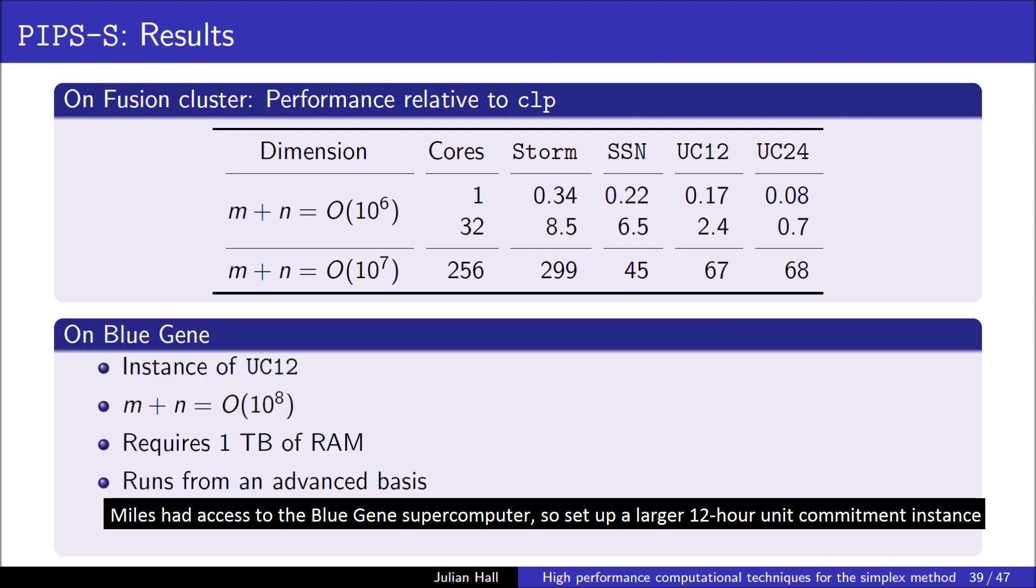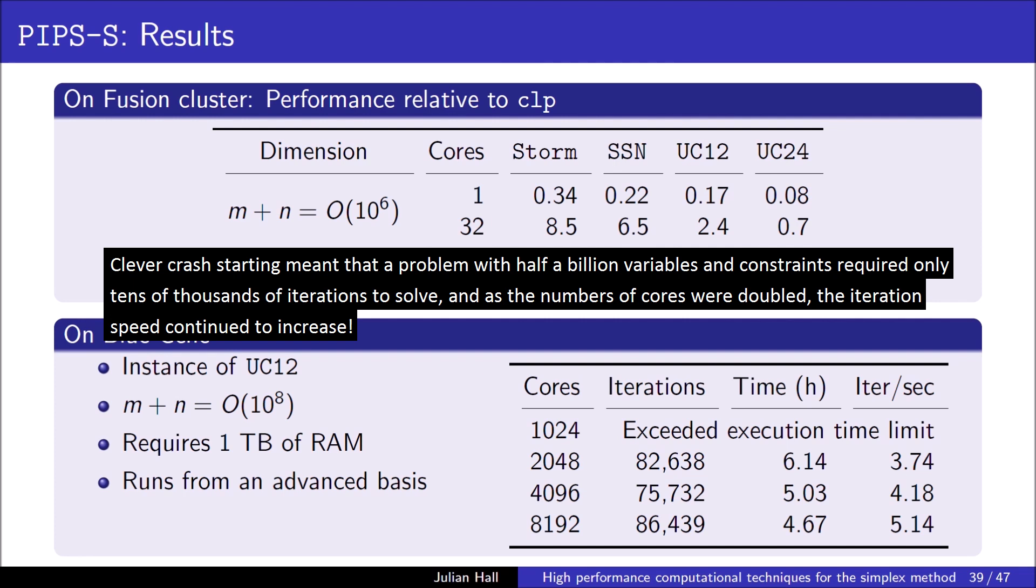Miles had access to the Blue Gene supercomputer, so set up a larger 12-hour unit commitment instance. Clever crash starting meant that a problem with half a billion variables and constraints required only tens of thousands of iterations to solve. And, as the numbers of cores were doubled, the iteration speed continued to increase.